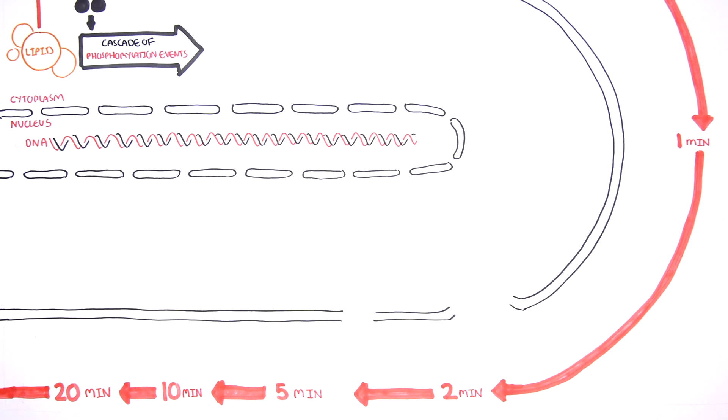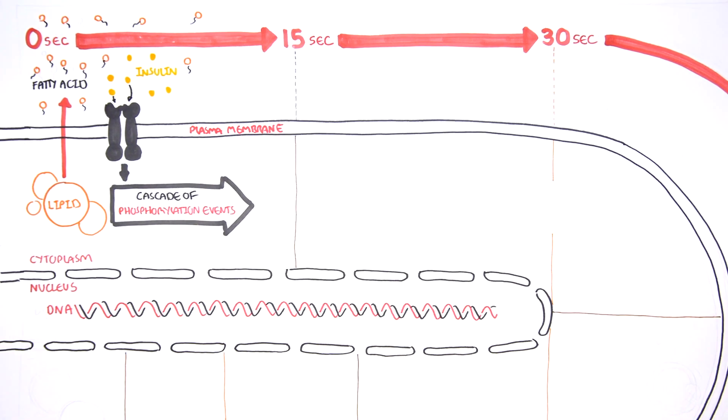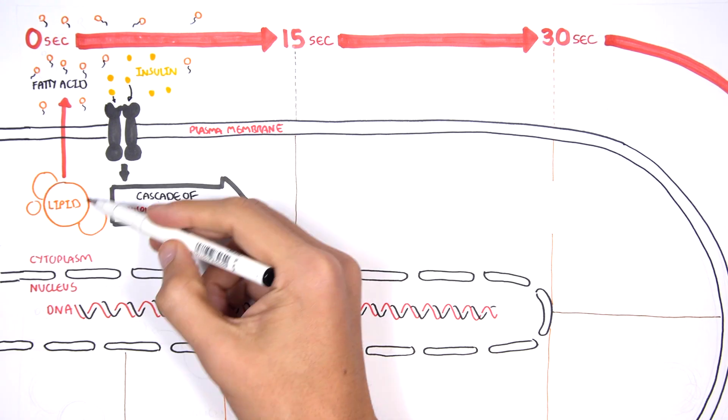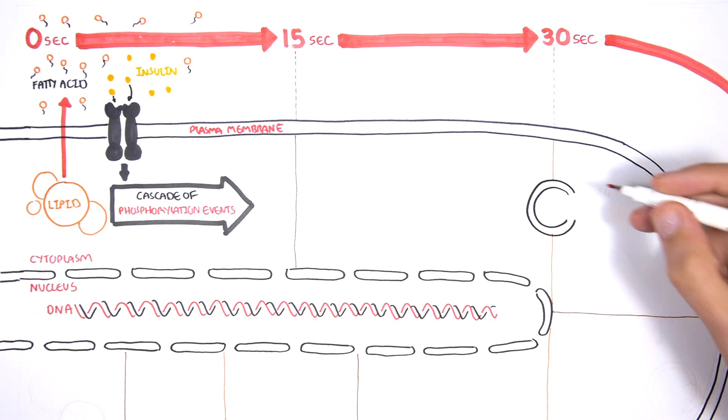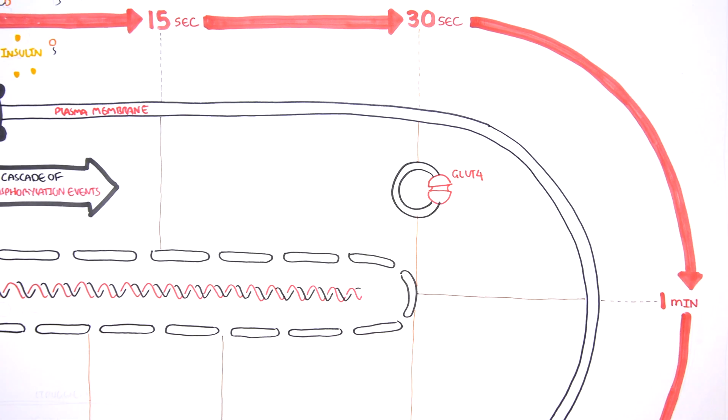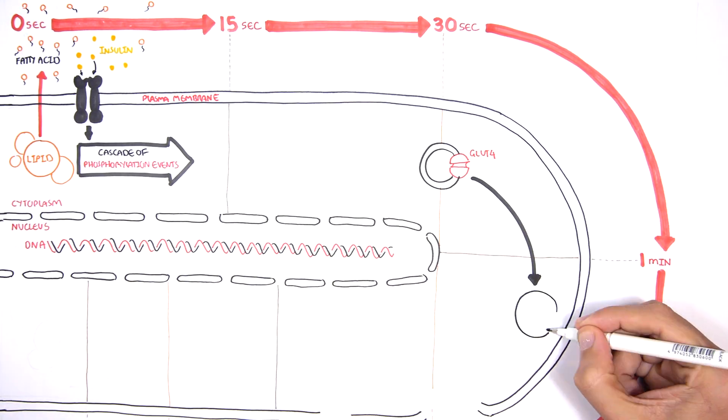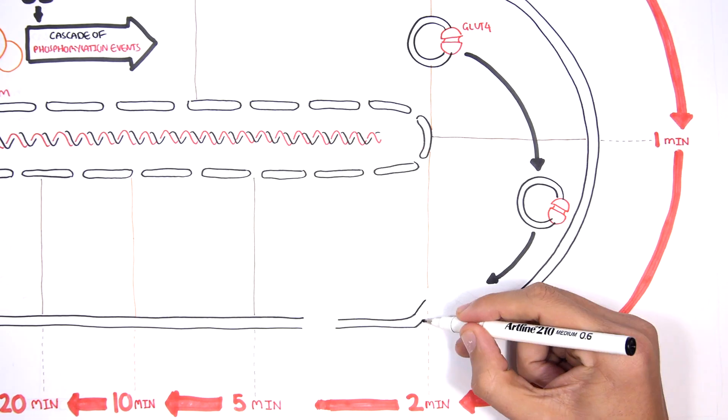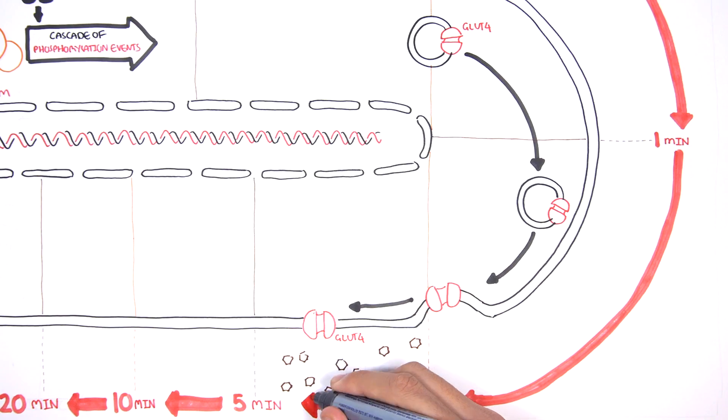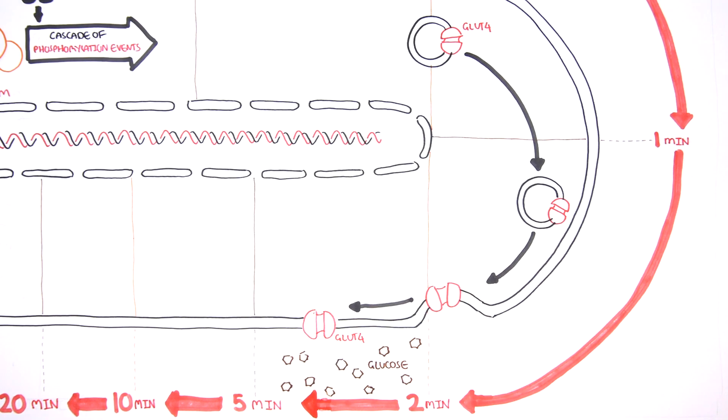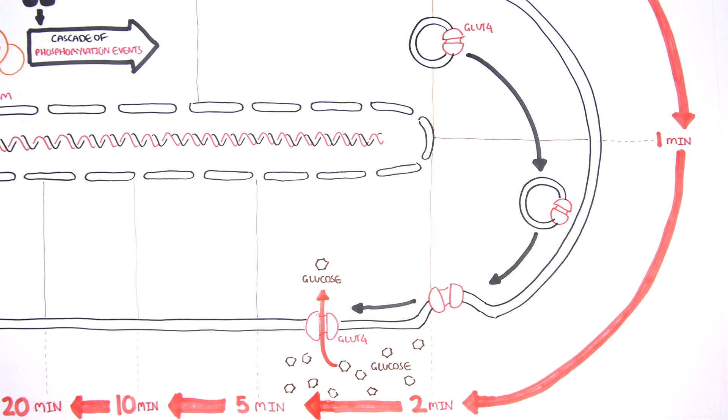The insulin phosphorylation cascade leads to the inhibition of lipid breakdown beginning right away. By 30 seconds, it stimulates GLUT4 glucose transporters to make their way to the surface of the cell. By 5 minutes, GLUT4 is highly active on the plasma membrane. GLUT4 allows the high amounts of glucose outside the cell to move inside the cell.